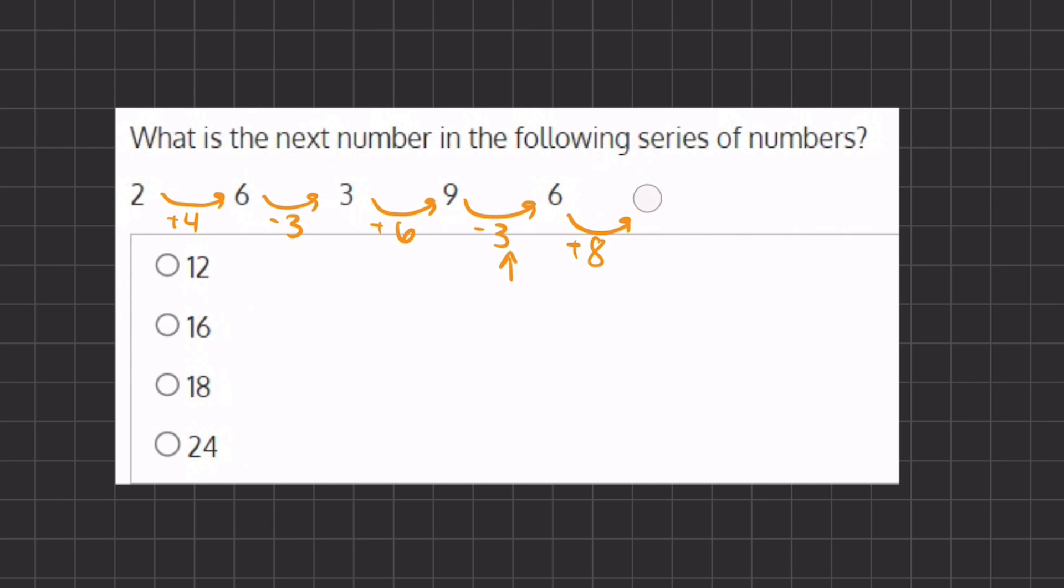We are going to add 8 because our addition grows by 2. Now if we do this, we have 6 plus 8 which will give us 14. And if we take a look at our answers, 14 does not show up in our answers.